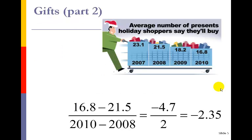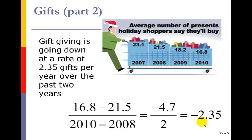For this example, I've got to calculate the slope. I took the information from 2008 and 2010, put the change in y values — the change in number of presents — on top, and the change in time on the bottom. The result is a negative value, which makes sense because presents are going down — people are buying less. Decrease situations are indicated by a negative slope. The calculation gives us negative 2.35, meaning gift giving is going down at a rate of 2.35 gifts per year over the past two years.